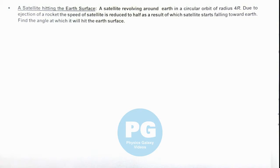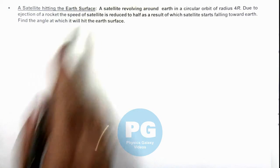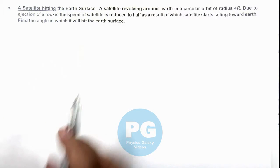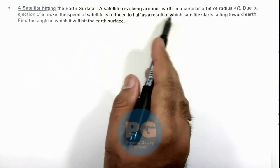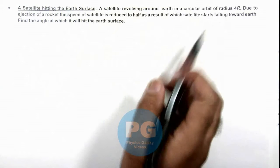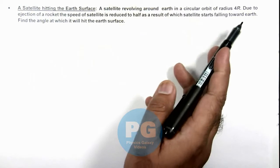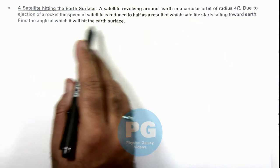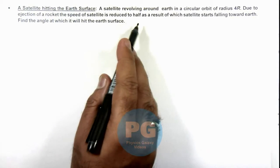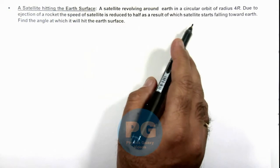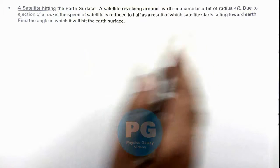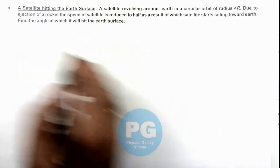In this illustration, we'll study a satellite hitting the surface of Earth. We are given that a satellite revolving around Earth in a circular orbit of radius 4R. Due to ejection of a rocket, the speed of the satellite is reduced to half, as a result of which it starts falling toward Earth. We are required to find the angle at which it will hit the Earth surface.